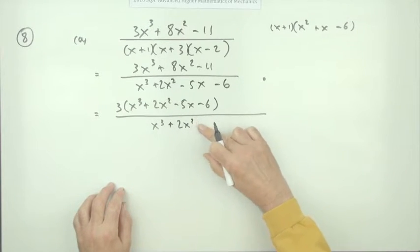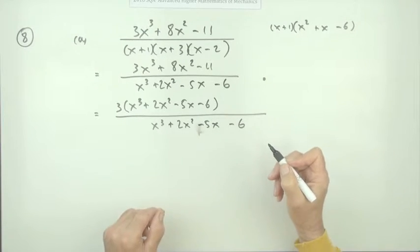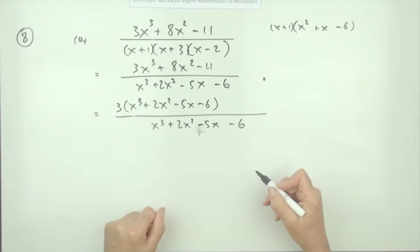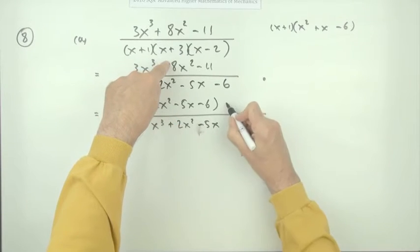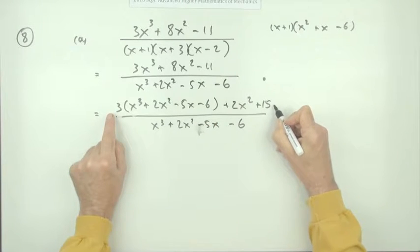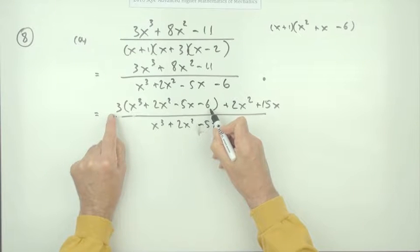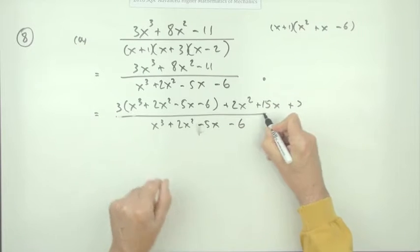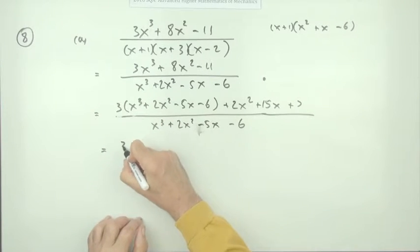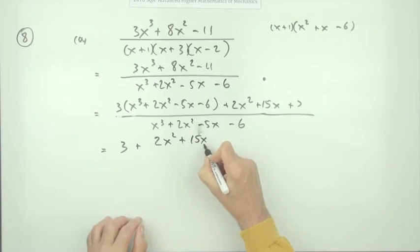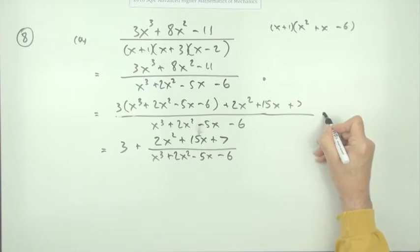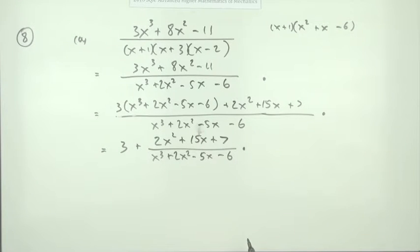Now I need to just find out what do I need to correct this back into what it should have been on top. This says I've got 3x cubed, that said I've got 3x cubed, don't need to mend that. This says I've got 6x squared, that says I've got 8, so I need another plus 2x squared. This says I've got minus 15x, that's got no x's, so I'll have to add those 15x back on. This says I've got minus 18, but it's only meant to be minus 11, so I'll have to add 7 back on. That's just one way of doing it without doing a division. Those two parts over the same denominator—that cancels and leaves you with 3, and then the other part would be 2x squared plus 15x plus 7 over the original x cubed plus 2x squared minus 5x minus 6.